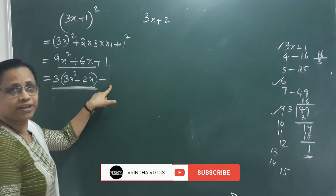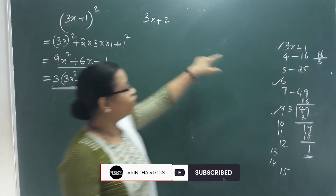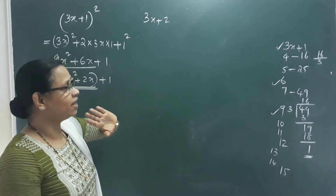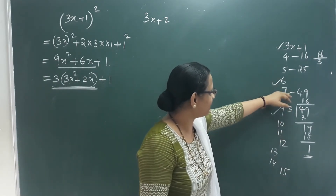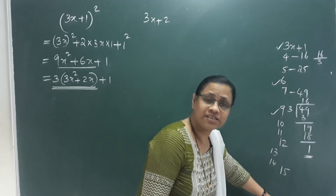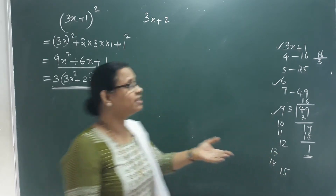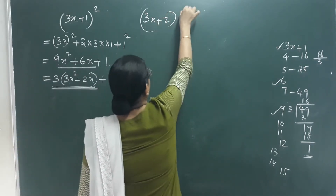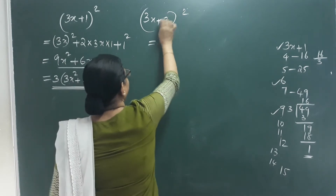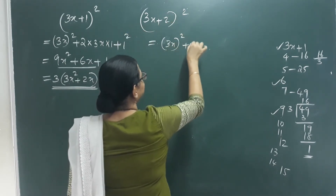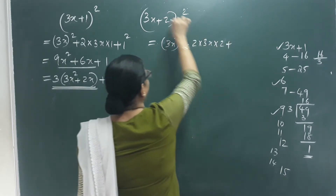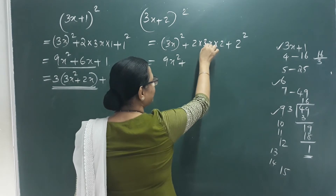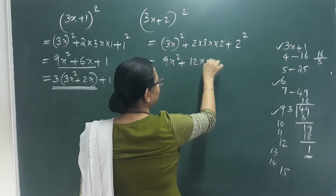Let's prove this for 3x plus 2: that means 2, 5, 8, 11 — numbers like 9, 12, 15. So (3x+2)² expanded gives: a square is 9x square, plus 2ab is 2 into 3x into 2 which is 12x, plus b square is 2 squared which is 4. So we get 9x square plus 12x plus 4.